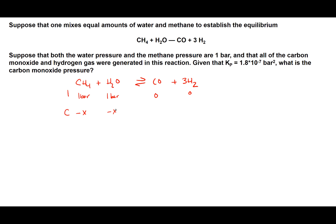For CO and H2: if we use up 1X equivalent of CH4, we should make 1X equivalent of CO. In the case of H2, we make 3X equivalents, because for every mole of CH4 and every mole of H2O consumed, we form 3 moles of H2 — that's why it's 3X. For the equilibrium row, we have 1 minus X bar for CH4, 1 minus X bar for H2O, X bar of CO, and 3X bar of H2.